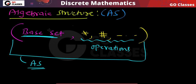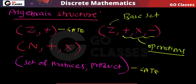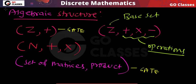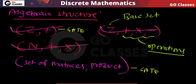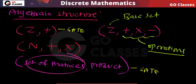For example, the set of integers with the addition operation is an algebraic structure — the integers are the base set and addition is the operation. The set of natural numbers with addition and multiplication is another algebraic structure. The set of integers with three operations is also one. Similarly, the set of matrices with the product operation is also an algebraic structure.